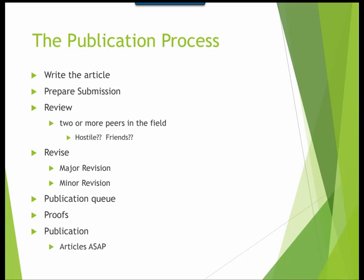The first step is writing the paper. After you've written it, you need to submit it to the journal. The editor will then generally assign an associate editor who will handle your manuscript, and he or she will send it out for review. In about six to eight weeks, you'll receive a decision from the journal concerning your article's eventual publication.